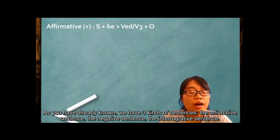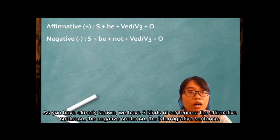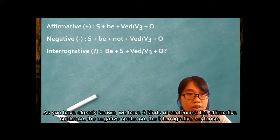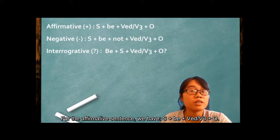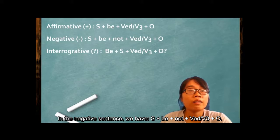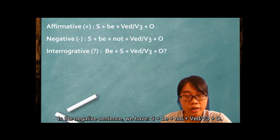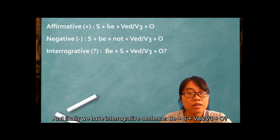Now, as you have already known, we have three kinds of sentences which are affirmative sentence, negative sentence and the interrogative sentence. For the affirmative sentence, we have subject plus be plus verb ED or the past participle plus object. In the negative sentence, we have subject plus be plus not plus verb ED or past participle plus object. And finally, we have interrogative sentence: be plus subject plus verb ED or past participle plus object.